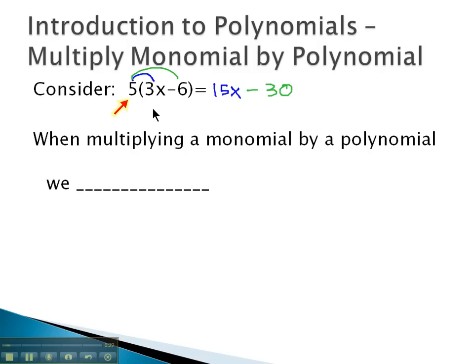In reality, 5 is a monomial - it's one term - and 3x minus 6 is a binomial or another polynomial. So really, we've done this process before. Multiplying a monomial by a polynomial, we know we simply have to distribute.